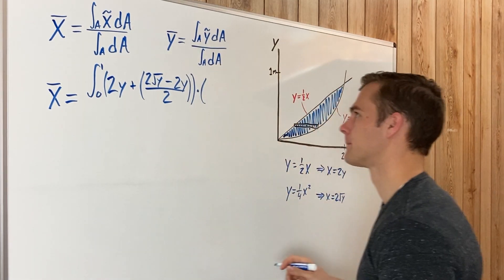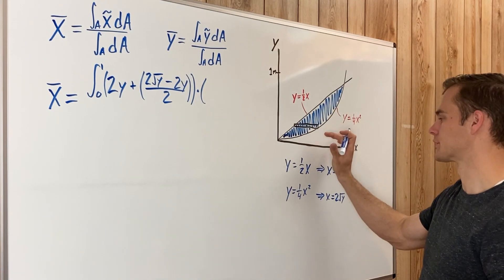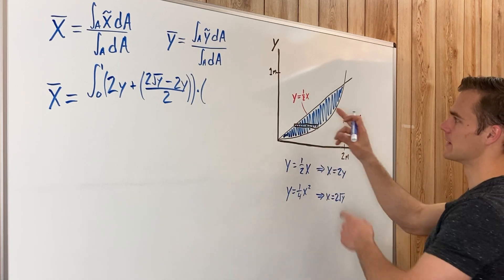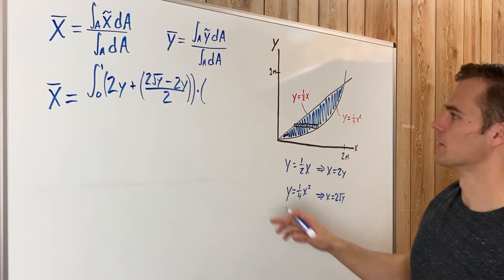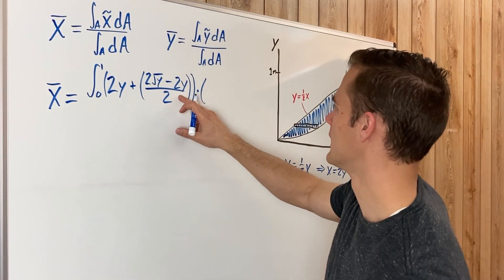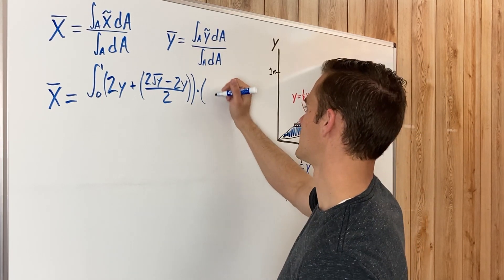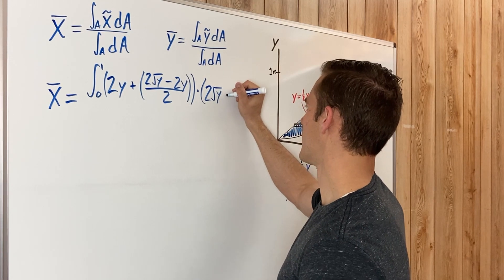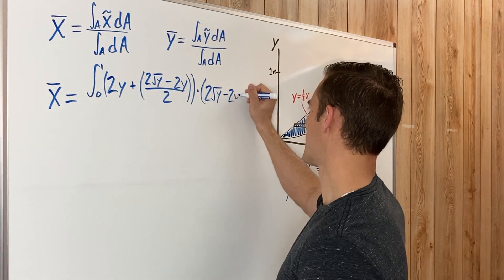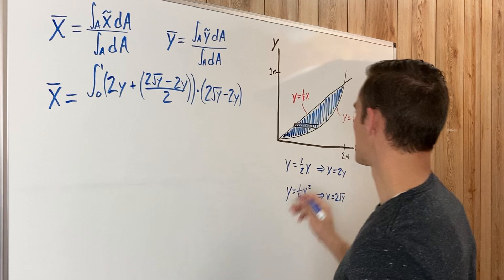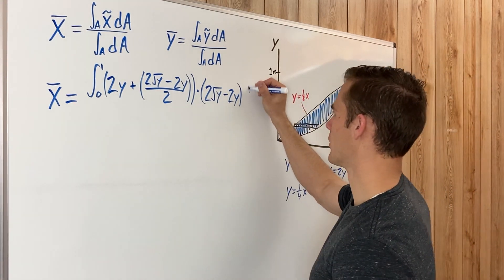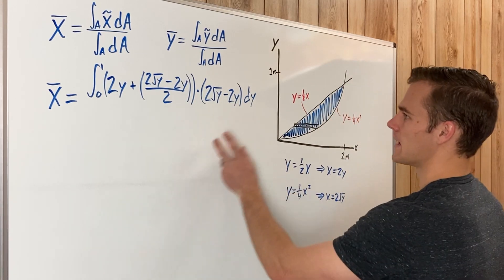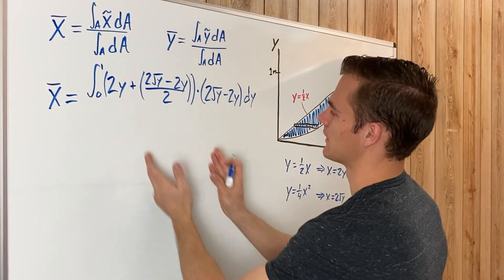And so for DA, we are going to have, the DA is the area of this little strip. So the height of it is once again the distance between these two functions. So the only difference between that and this is it's just not going to be divided by two.